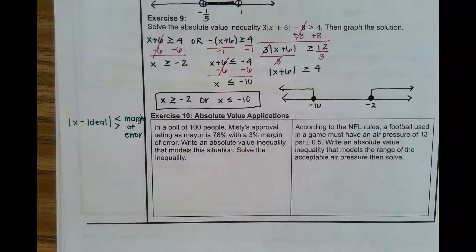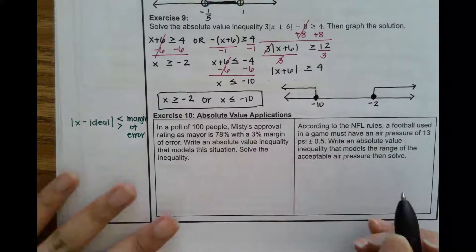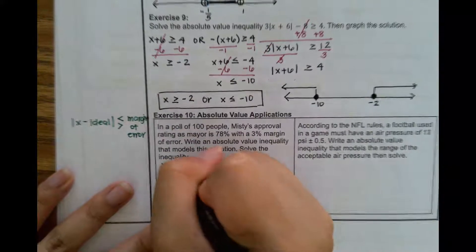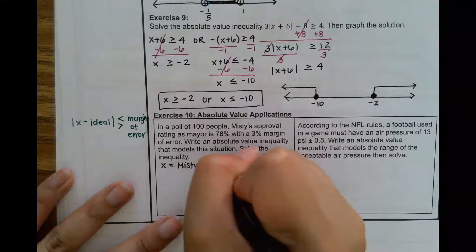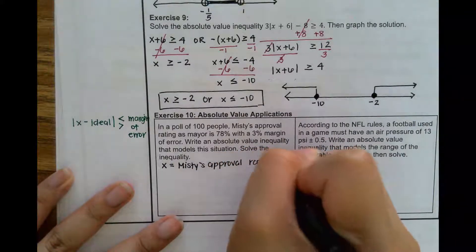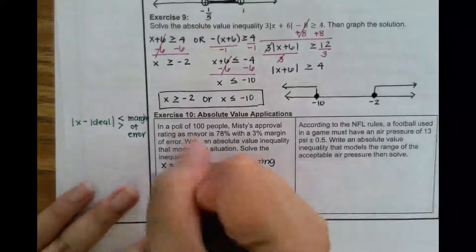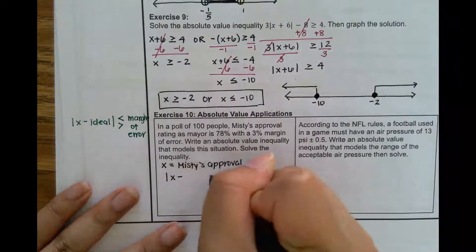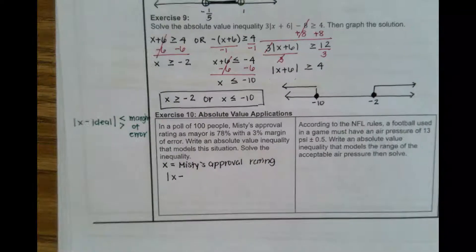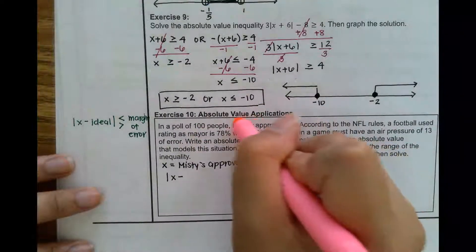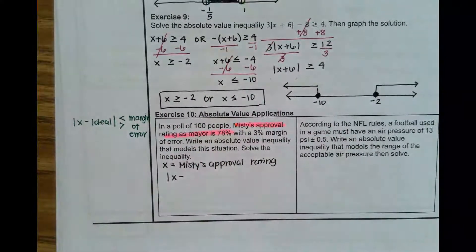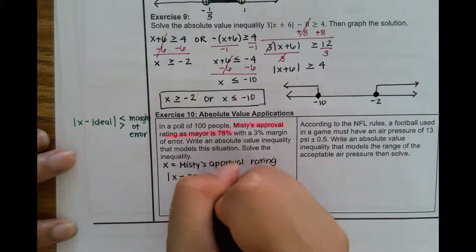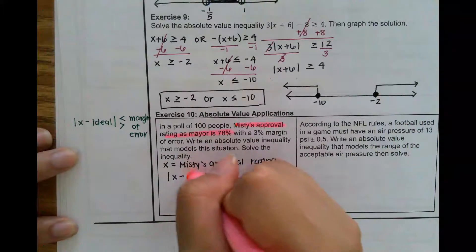In a poll of 100 people, Misty's approval rating as a mayor is 78% with a 3% margin of error. We want to write an absolute value inequality that models the situation, and then solve the inequality. Here, x represents Misty's approval rating. Our absolute value equation is x minus the ideal. Ideally, if this poll is correct, her approval rating is 78%, so 78% of the people like Misty. There's no need to write the percent sign.